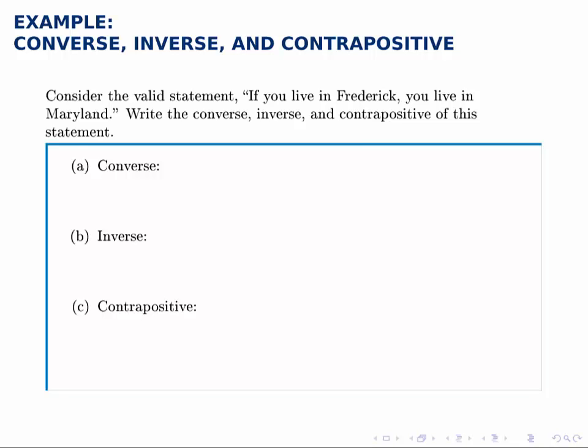Write the converse, inverse, and contrapositive of the statement: if you live in Frederick, then you live in Maryland. The converse, inverse, and contrapositive are the three variations we can make by switching pieces around in this conditional statement. This original conditional statement we could write as P implies Q, where P is 'you live in Frederick' and Q is 'you live in Maryland.' If P then Q.